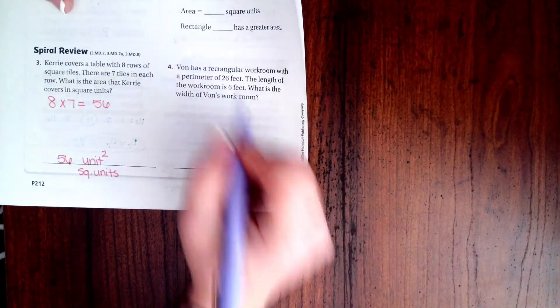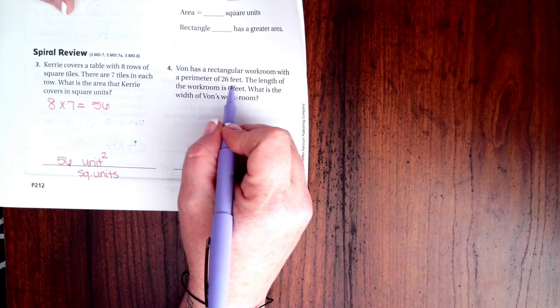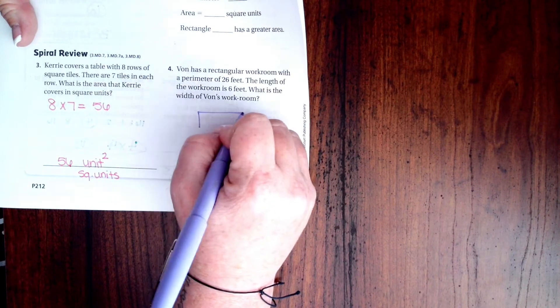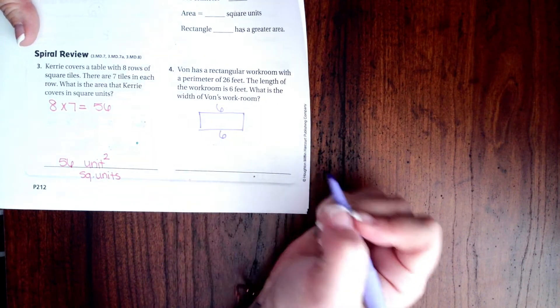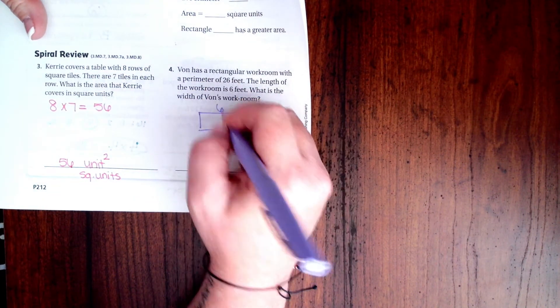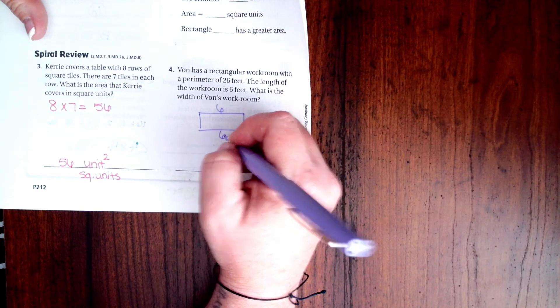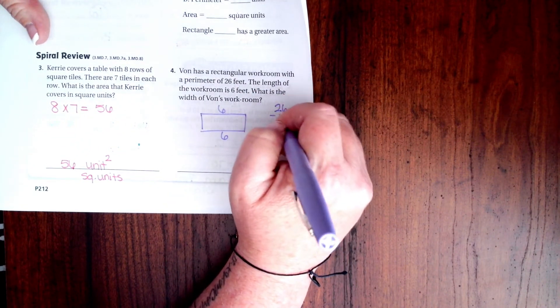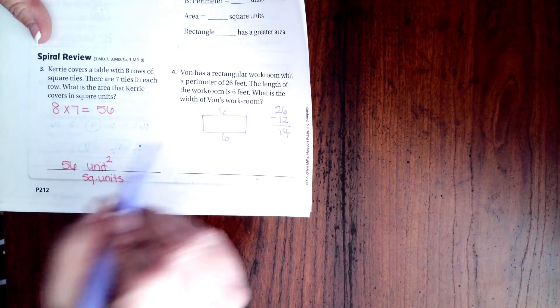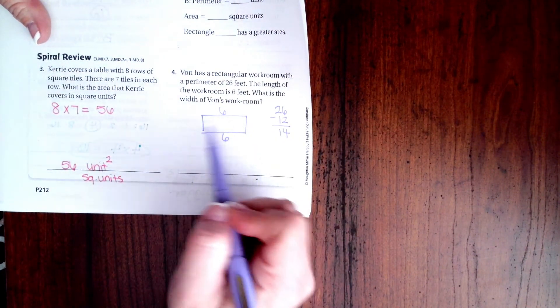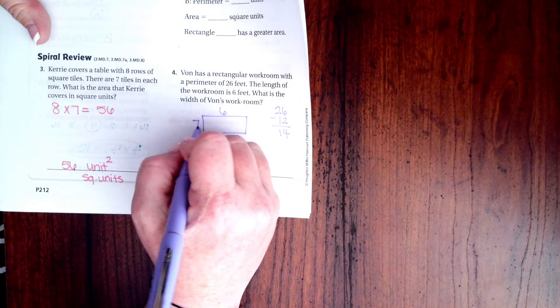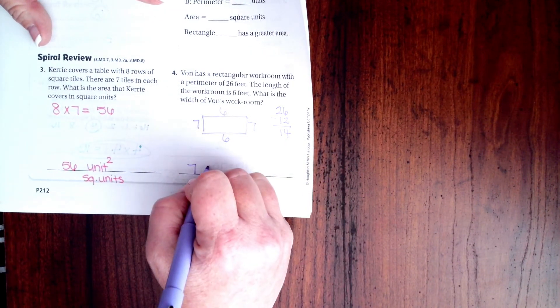Alright. Vaughn has a rectangular workroom with a perimeter of 26 feet. The length of the workroom is 6 feet. So, that means that this side and this side are 6, okay. What is the width of the room? So, now I have 6 and 6, which is 12. Okay? So, I need to do 26 and take away that 12, which leaves me with 14. Okay? Now, that 14, I have to split up between these two sides, just like I did here with the 6s. So, half of 14 is 7. So, 7 feet.